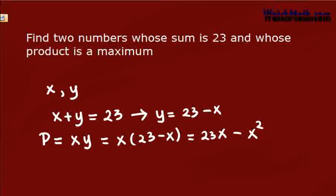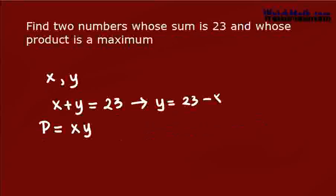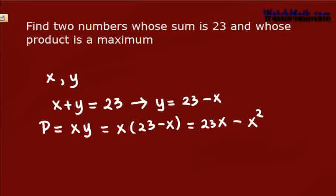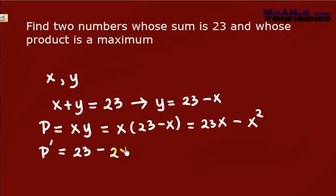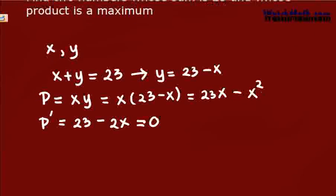Now our job is to maximize the function p. In order to do so, we need to take the derivative of p to find the critical numbers. So the derivative of p equals 23 minus 2x.